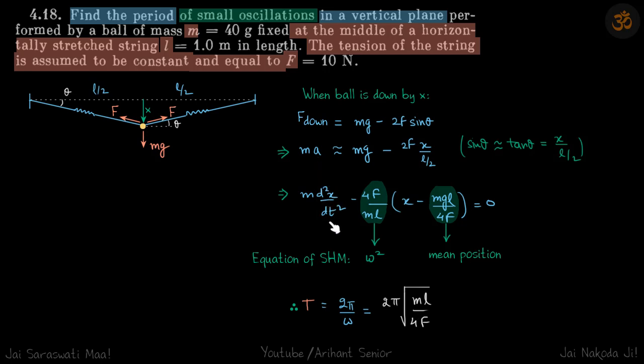F_down is mg minus 2F sin θ. Because the oscillations are small, sin θ can be approximated to tan θ, and tan θ is x divided by l/2.